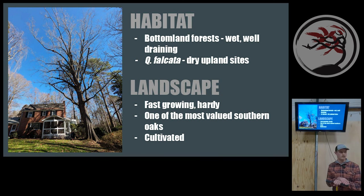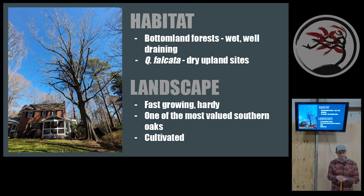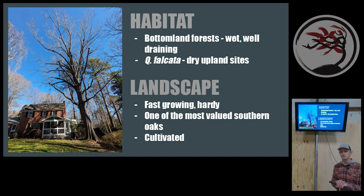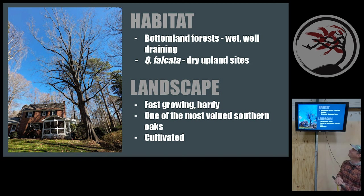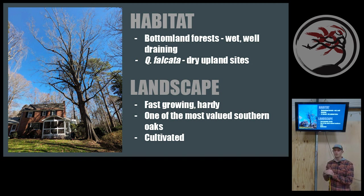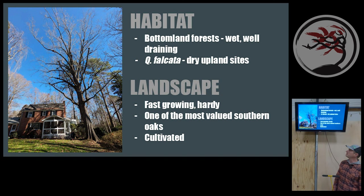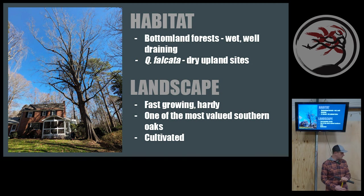Cherry bark oaks are hardy and pretty well adapted to a wide range of soil types, doing well even on drier sites, though Quercus falcata is a bit more drought resistant. The tree tends to have better form than southern red oak — you'll notice this is a really great structure for a tree this size, with all branches being pretty small in relation to the trunk diameter. These are pruning cuts David made a few years ago.